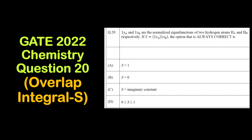The question is: if 1sA and 1sB are the normalized eigenwave functions of the two hydrogen atoms HA and HB respectively, and S — that is the overlap integral — is given in bracket notation, then the option that is always correct is?